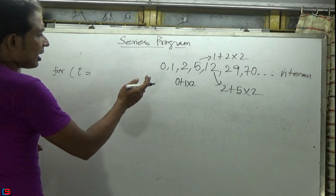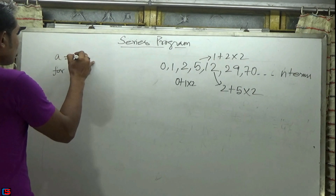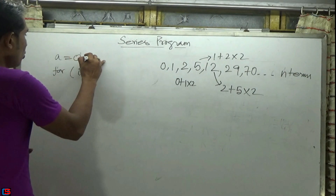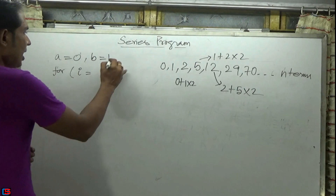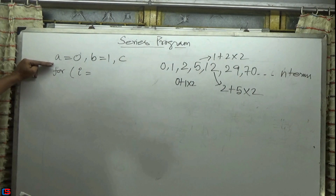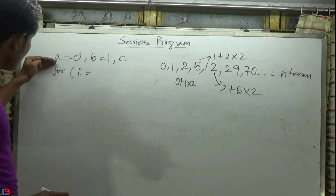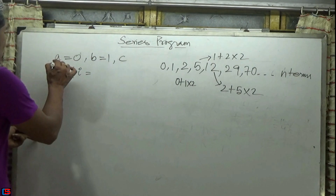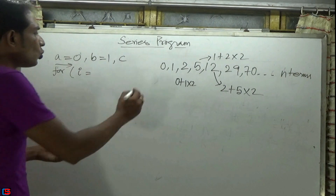Before starting the loop, I am declaring two variables: 'a' initialized to 0 (the first value) and 'b' initialized to 1 (the second value). I am also declaring another variable 'c'. Before starting the loop, I will print the values of a and b, so these first two terms are already printed.